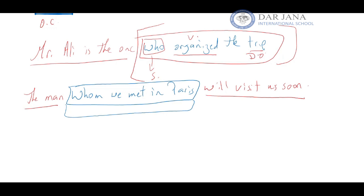Within the clause 'whom we met in Paris,' the verb is 'met.' Who did the action? 'We' — so 'we' is the subject. Whom did we meet? 'Whom' — so 'whom' is the direct object of the verb, the objective case. It's very important to isolate the clause and see how 'who' or 'whom' functions within that clause itself.